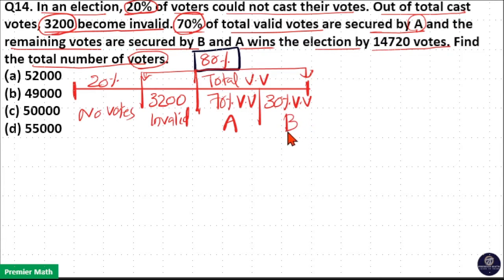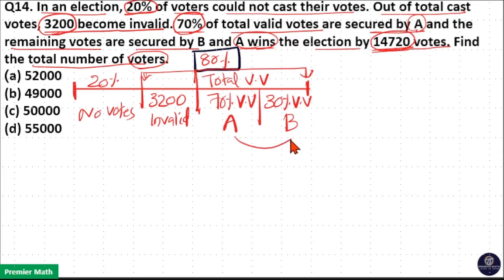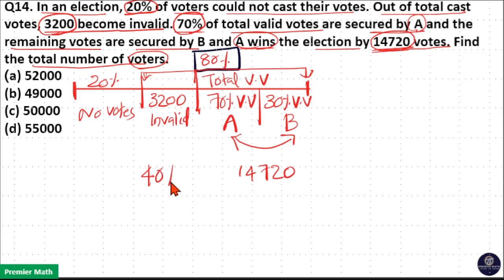A wins the election by 14720 means total votes received by A minus total votes received by B equals 14720. So the difference between votes received by A and B is 14720, which equals 70% of valid votes minus 30% of valid votes. Therefore, 40% of valid votes equals 14720.